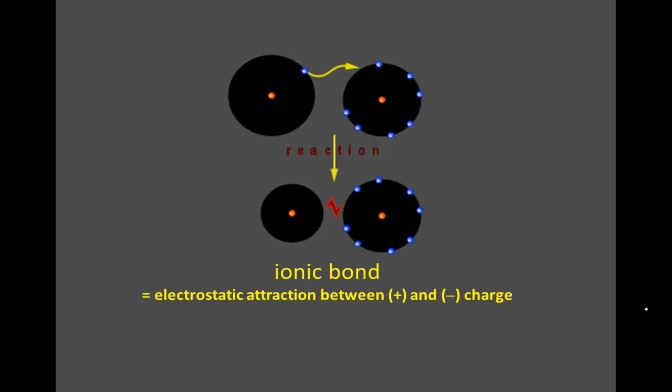So here we have a metal reacting with a nonmetal. The transfer of the electron, the reaction, results in a positive ion and a negative ion. So you could call this a sodium atom and this a chlorine atom, and once the sodium loses an electron, it becomes Na+, and the chlorine gains that electron and becomes Cl-.